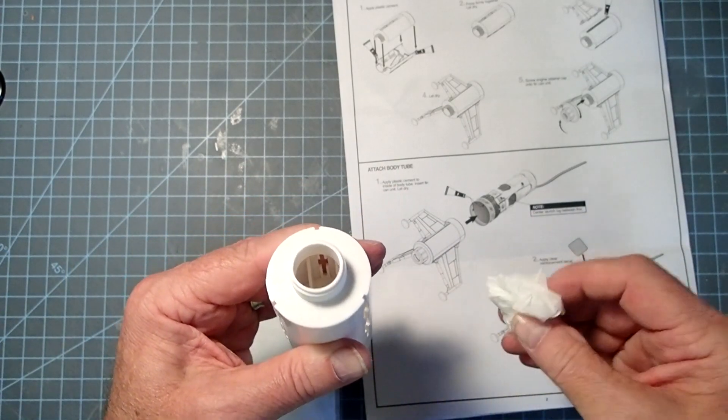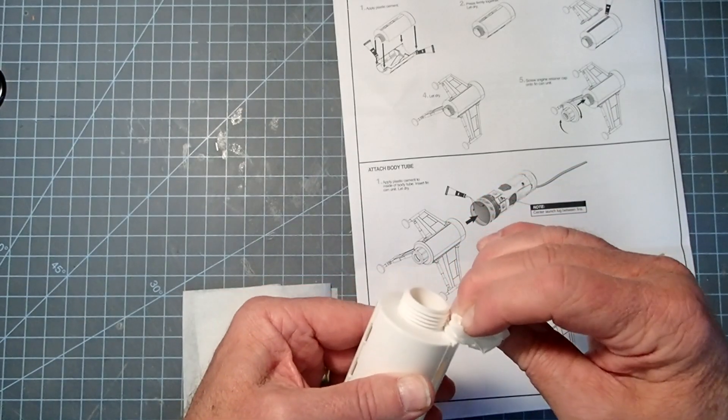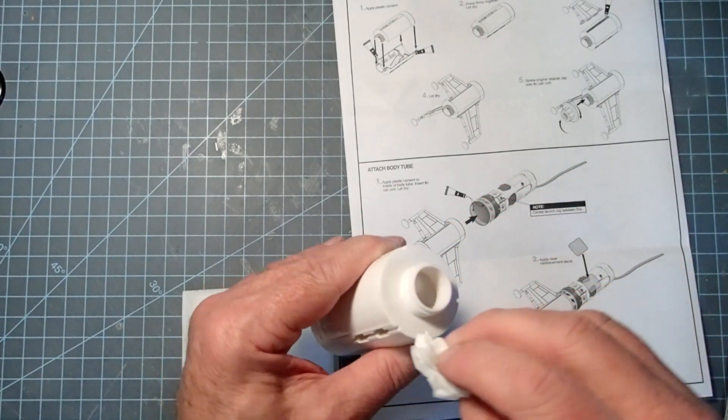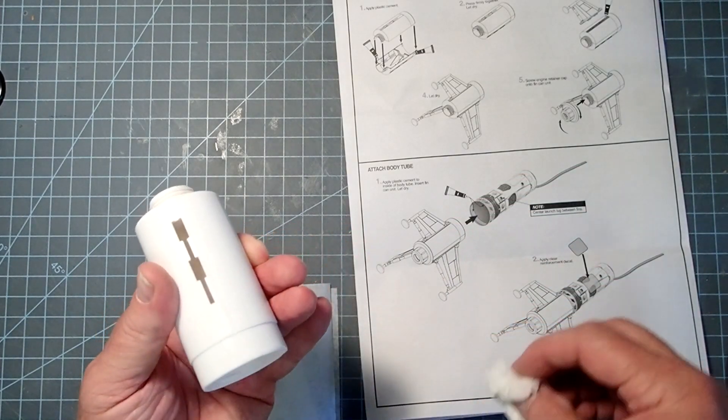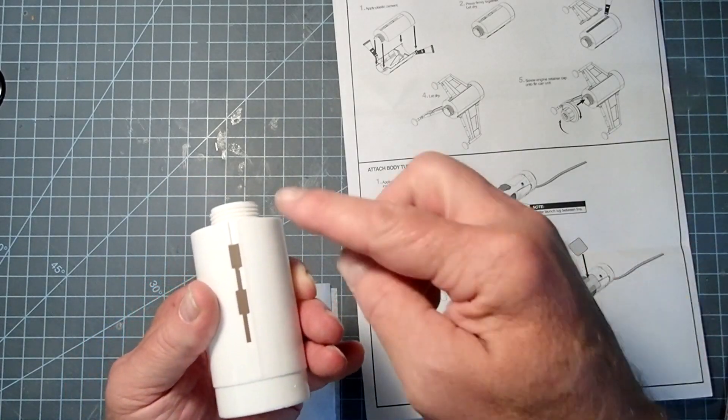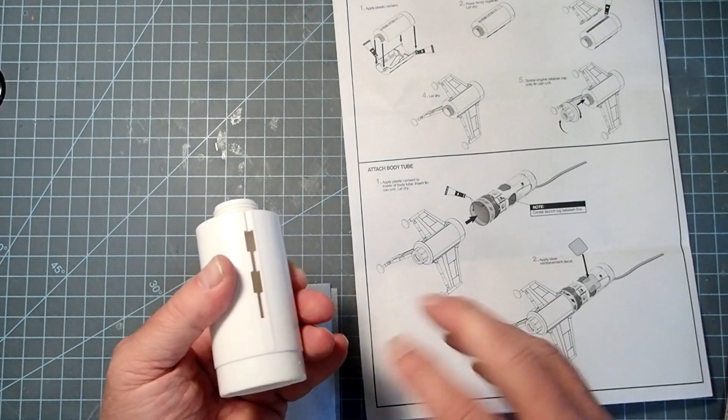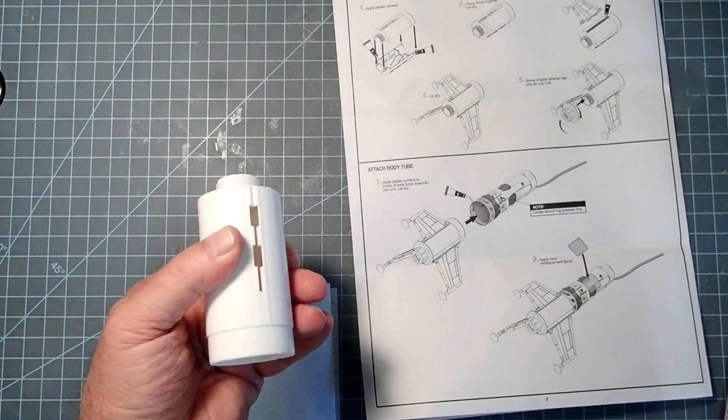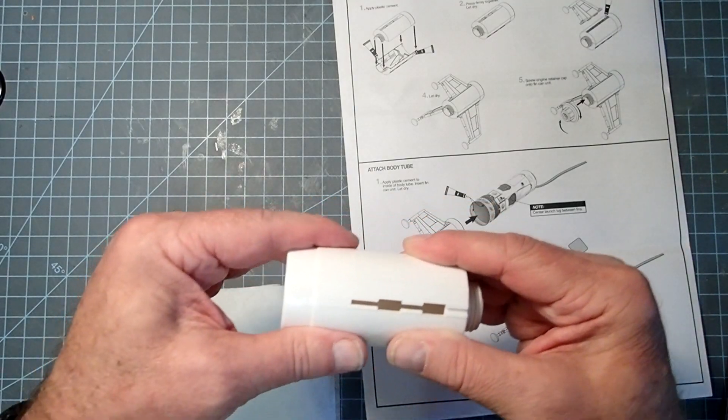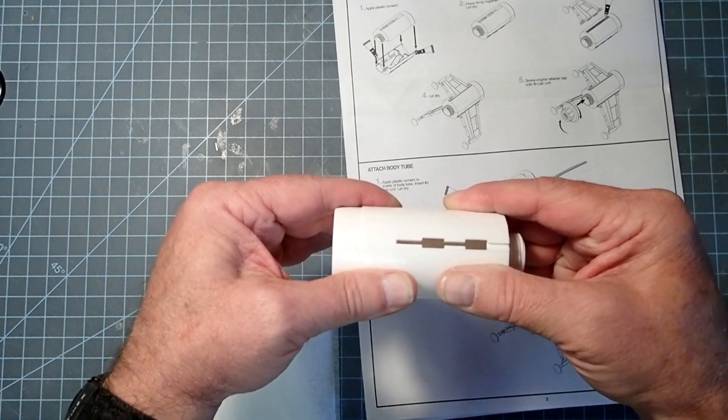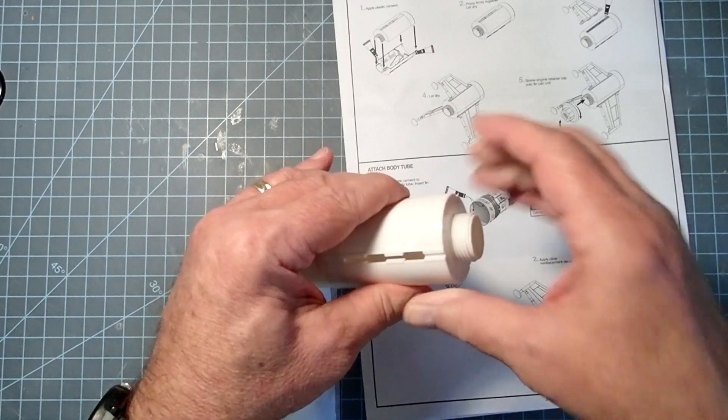Now, before the glue dries completely, if you have any places where you've got some that kind of oozed up, just really quickly wipe those off. If you wait too long, it'll smear. A little bit coming out, as long as it's not somewhere critical like inside the motor mount, once it dries it's really not noticeable. This needs to dry probably for at least 15 minutes before we go on to the fin. So I'm going to set this aside and let it go.